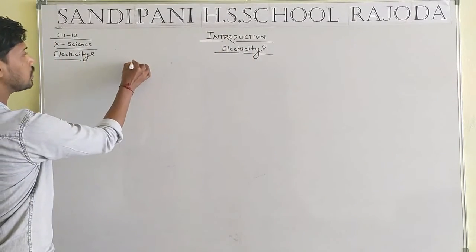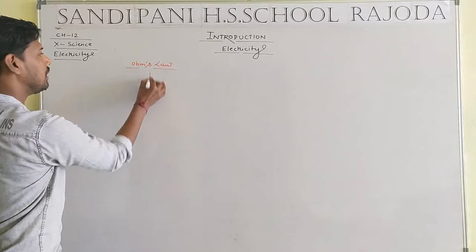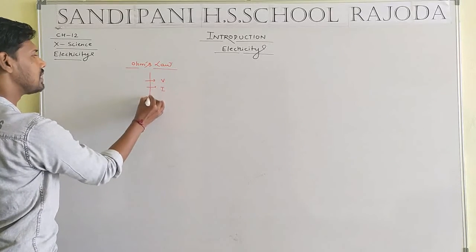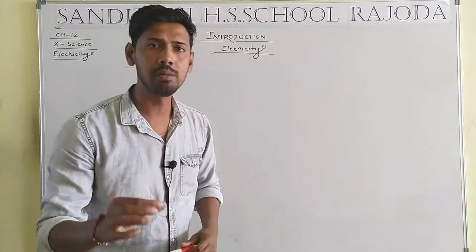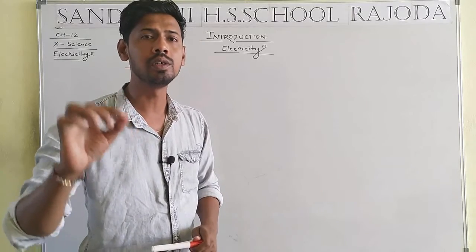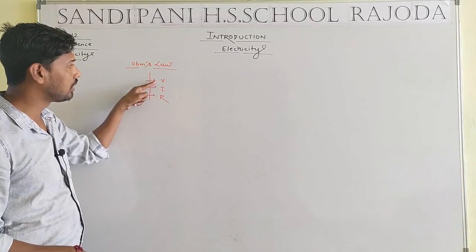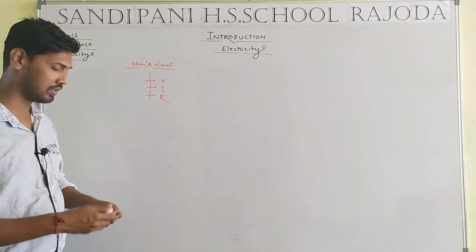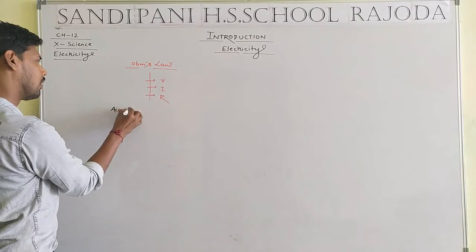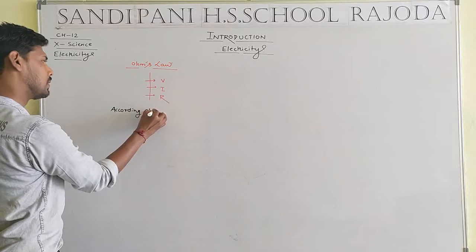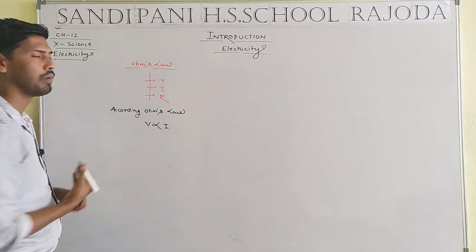We will start with Ohm's law. Ohm's law defines a relation between three things: first, V (voltage); second, I (current); and third, R (resistance). Ohm's law establishes a relation between voltage, current, and resistance.